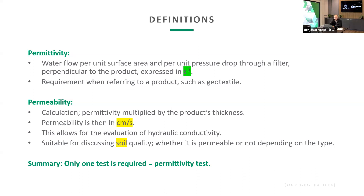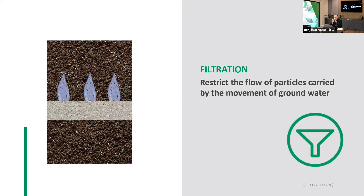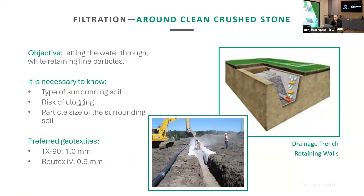For filtration, the concept is simple: we want water to pass through while blocking small particles. The objective is to let water seep through but retain the solids. Typical applications include filters around clean crushed stone — for example, an excavator installing a drain pipe surrounded by crushed stone with geotextile. The preferred geotextile for these applications is the TX90 or the Rootex.